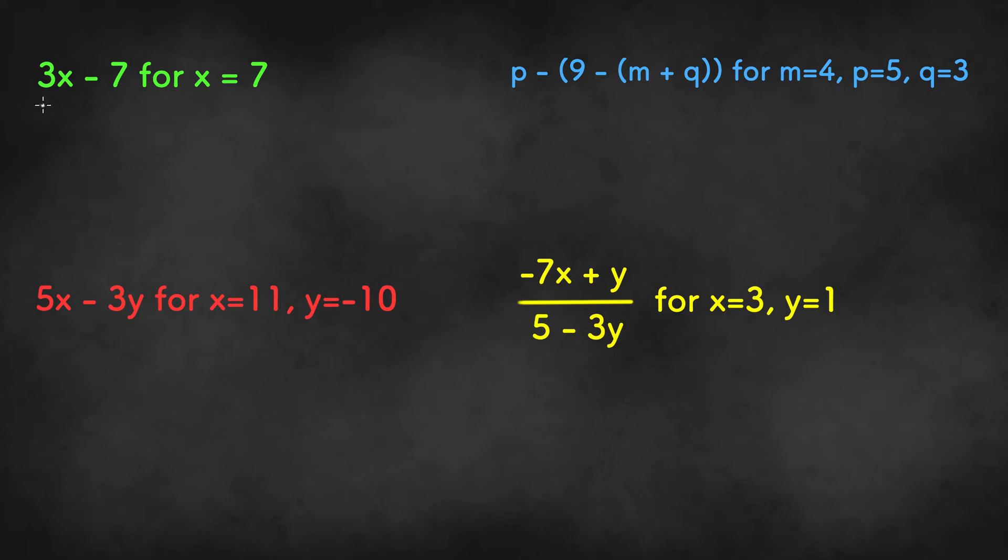In the first example, we have 3x minus 7 for x is equal to 7. This means that we need to plug in 7 for the variable x in the expression.